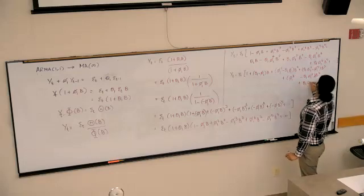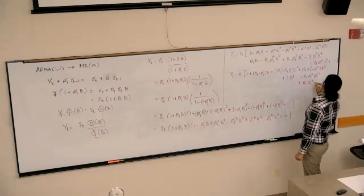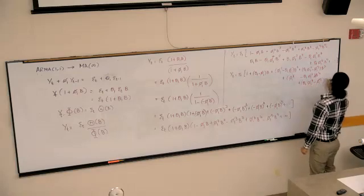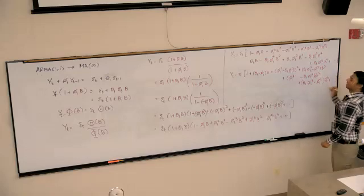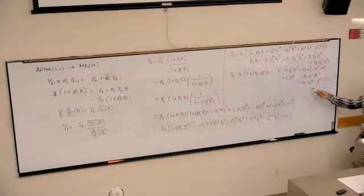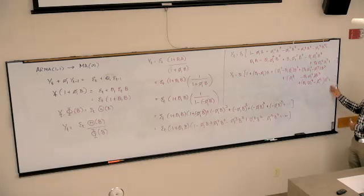And θ₁ times φ₁⁴ minus φ₁⁵ times B⁵. I can kind of see as to why — because we're talking about θ₁ and φ₁, and then it starts following a pattern.